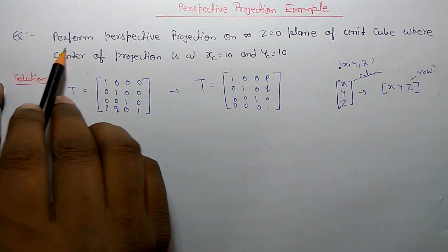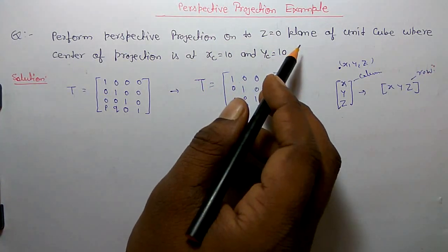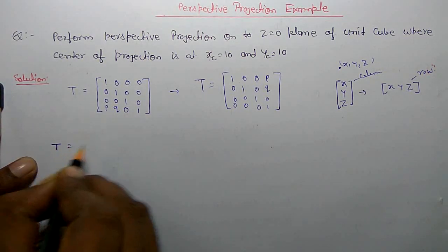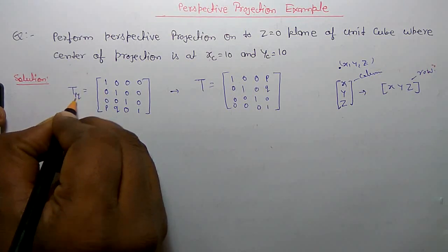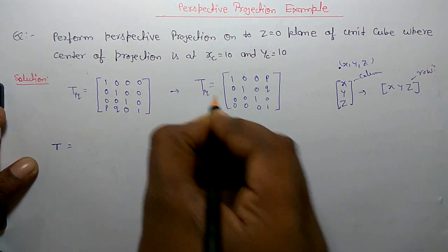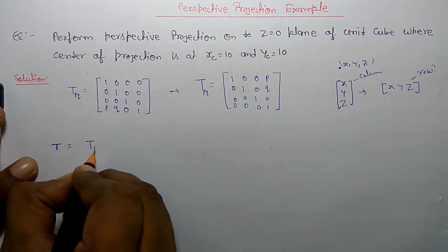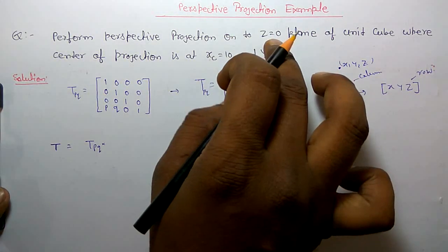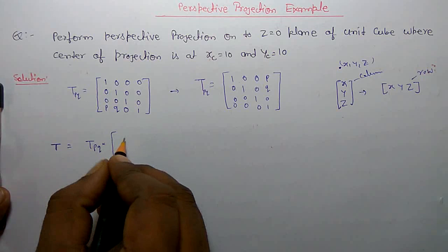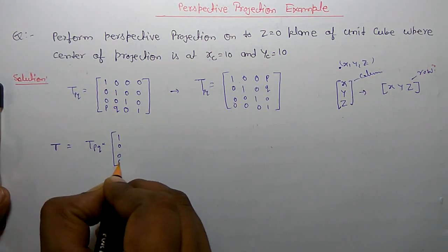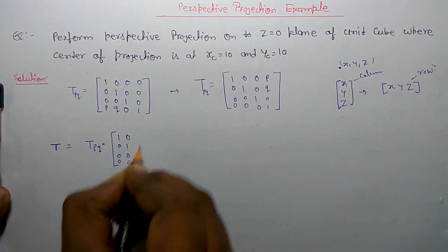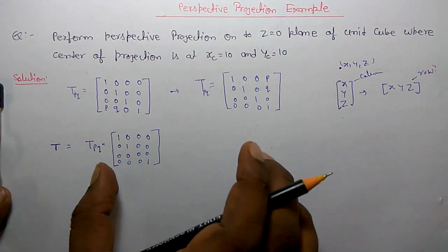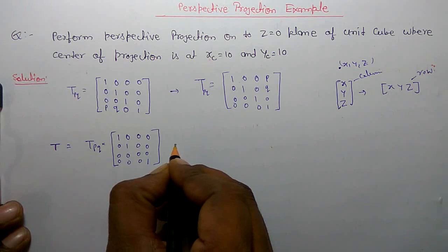Perform perspective projection on Z equal to zero plane. For Z equal to zero plane, XC and YC is given. So the transform matrix would be the transform matrix of two-point. I'm going to take that row measure order, and on Z equal to zero plane there is a matrix, and for the Z part it is zero. These all are represented in homogeneous coordinates, so this will be the complete transform matrix.